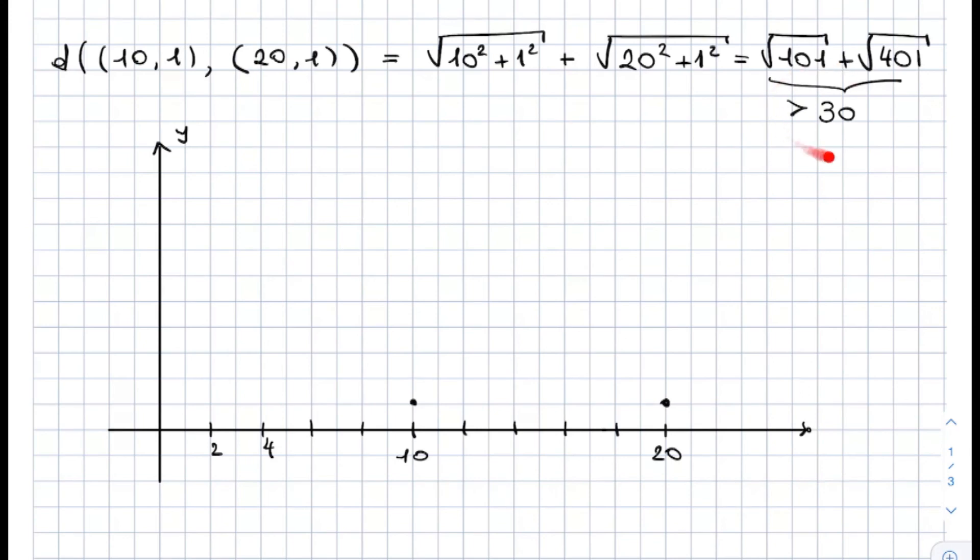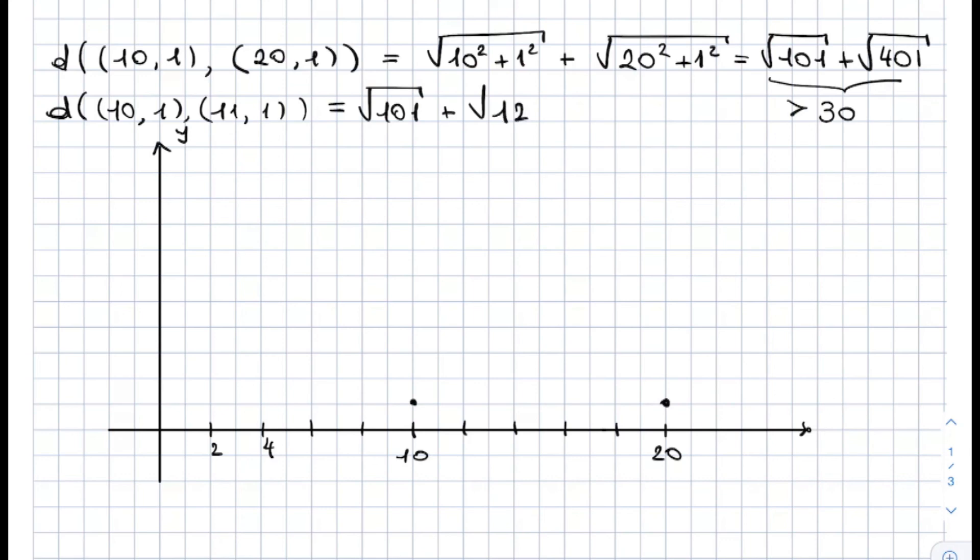but they're not even this far. And if you were to try and compute the distance between (10, 1) and (11, 1), then you would still get the square root of 101 plus the square root of 122, which is still bigger than 21. So in this case, the two points would be here and here, and they would be very near. They can be drawn very near, but their distance is very big.